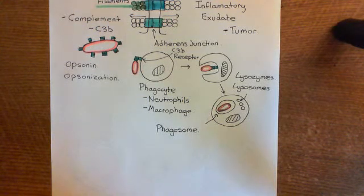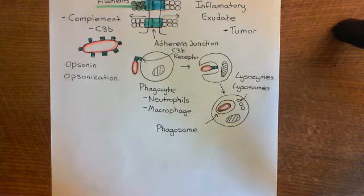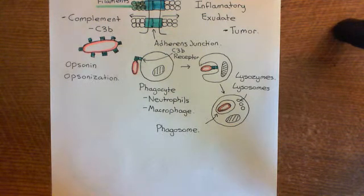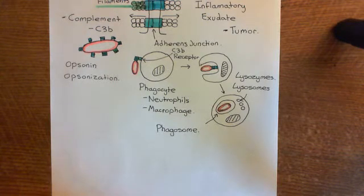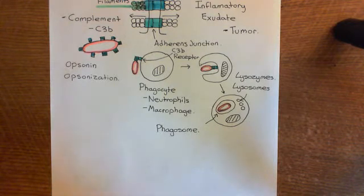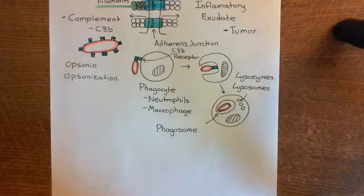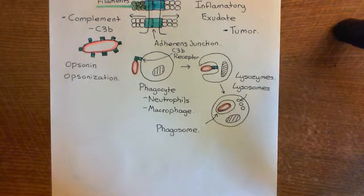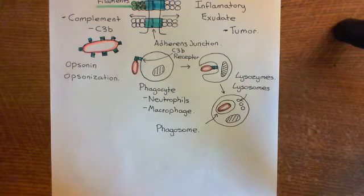Welcome to this next video in which we're discussing the recruitment of leukocytes to the area of infection. We're going over the acute inflammatory response just to put this subject in perspective and keep it all together. We are currently looking at Type 1 activation and the building up of an inflammatory exudate and what the point of that is.